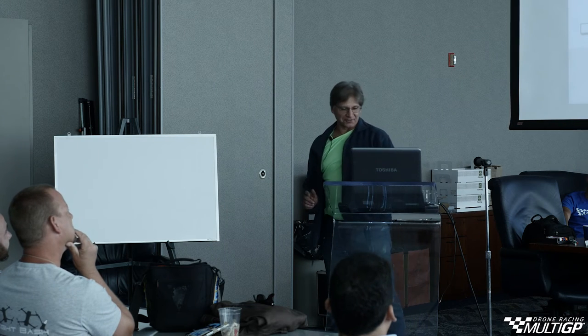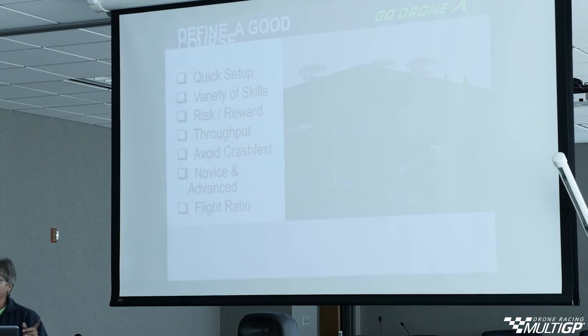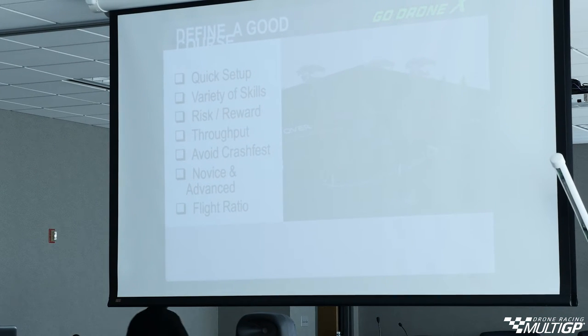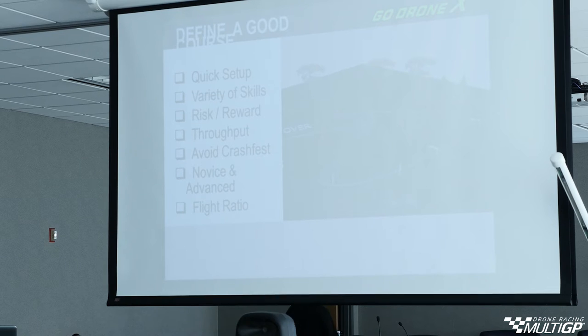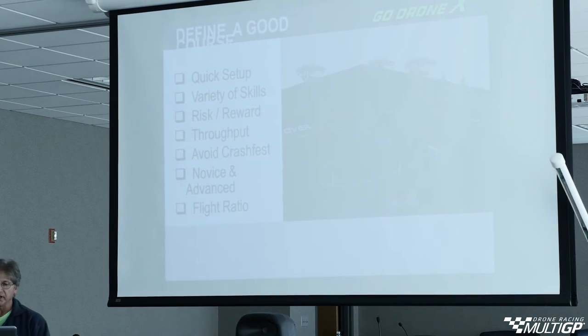Look at my list — the first thing I put on there is easy to set up and tear down. I love designing courses, I don't mind tearing them down, but I hate setting them up. Variety of skills — nobody mentioned risk/reward, and that's a big deal. We're going to talk about how to do risk/reward. Also, throughput — how to design a course that keeps our numbers turning — and avoid the crash fest.